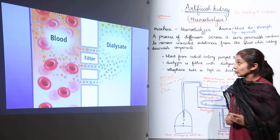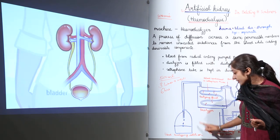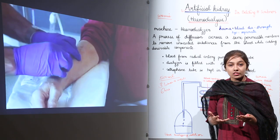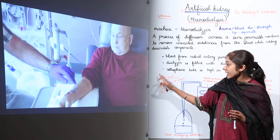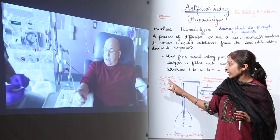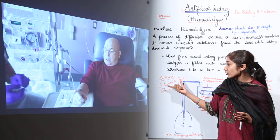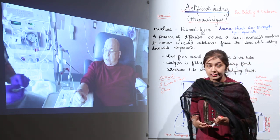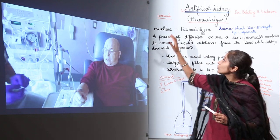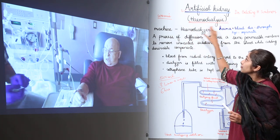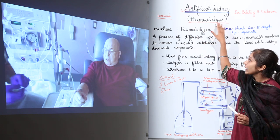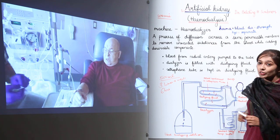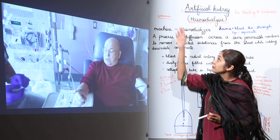As seen in this image, the used dialyzing solution is returned to the chamber. This process handles around 500 ml of blood at one time, is done three times a week for severe uremia patients, and takes approximately six hours. Uremia can be treated by this artificial kidney through the process of hemodialysis, using the machine called a hemodialyzer. Thanks to Dr. Belding S. Scribner, who gave hope to severe uremia patients.